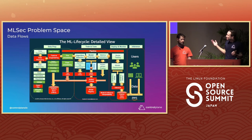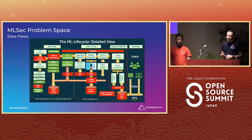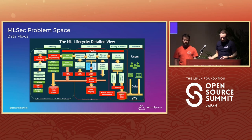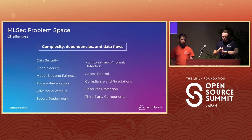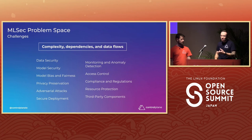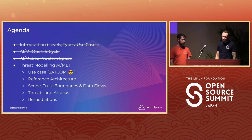This is a high-level view of the end-to-end process from data to end user, and with every interaction between components on the entity model, there is an opportunity for hostile interaction. The main challenges around securing MLOps have to do with the complexity, the dependencies, and the data flows. It's a multidimensional problem encompassing data security, model security, access control, and supply chain. And we solve this with threat modeling.